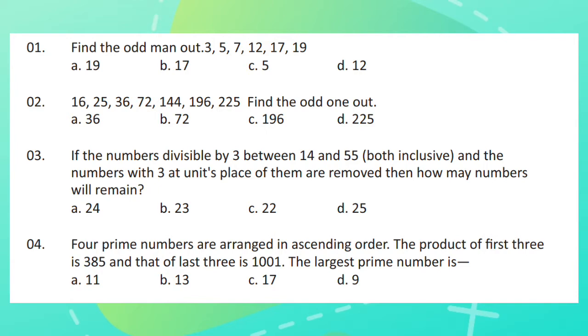Question 4. 4 prime numbers are arranged in ascending order. The product of first 3 is 385 and that of last 3 is 1001. The largest prime number is?